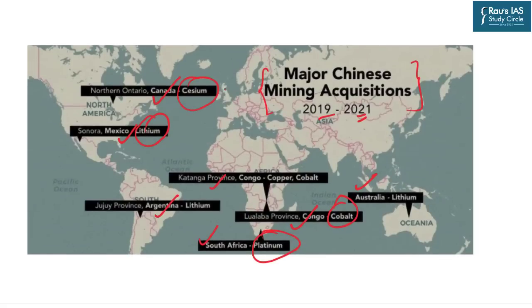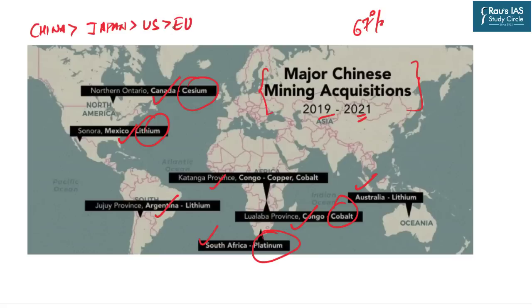China consumes around 67% of the total worldwide consumption of rare earth minerals. After China, the dominant consuming countries are Japan, the US, and the European Union. Data further suggests that China controls about 90% of global production of rare earth metals while possessing only 36% of the global reserves — highlighting the gap between its reserve share and its production dominance.